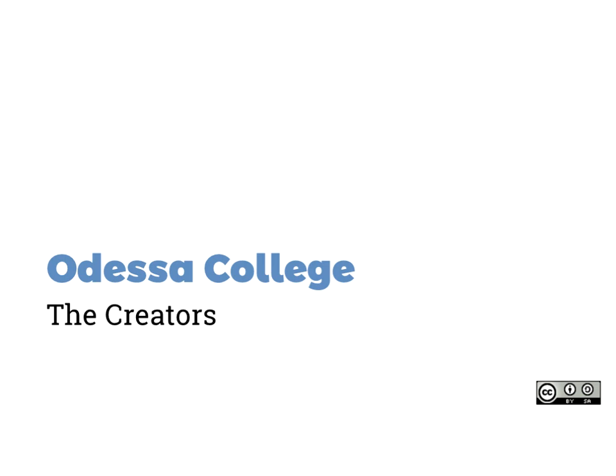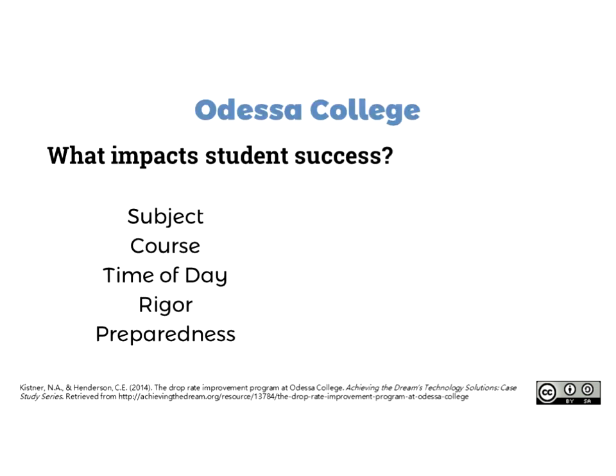Don set up his presentation by sharing that when the college scorecards came out from the White House — discussing completion rates, loan debt, and so on — he got a call from a news source asking why Odessa College was one of the worst colleges in the country, with the worst completion rates and students graduating with ridiculous loan debt and no degrees. He didn't know the answer, so he decided to investigate. Odessa was part of Achieving the Dream and had a strong partnership with a data solutions company, so he started looking at what impacts student success.